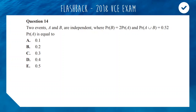Two events A and B are independent — that is important — where the probability of B is equal to two times the probability of A. And the probability of A union B is 0.52. Given that, probability of A is equal to, and you've got five options.